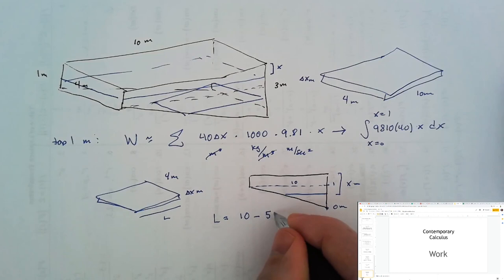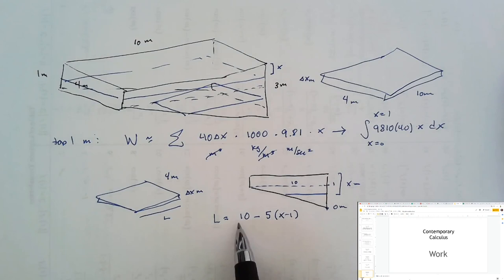When I plug in x equals 1, I get a length of 10. When I plug in x equals 3, I get a length of 0, just as we want.